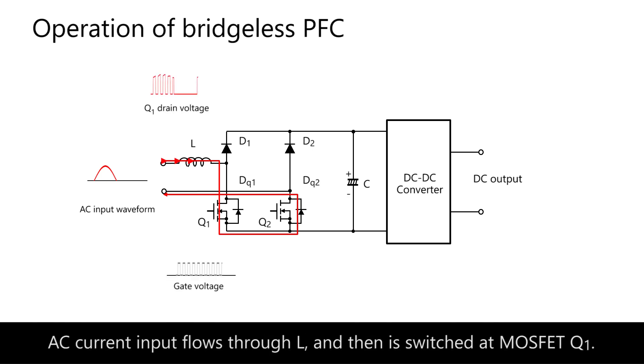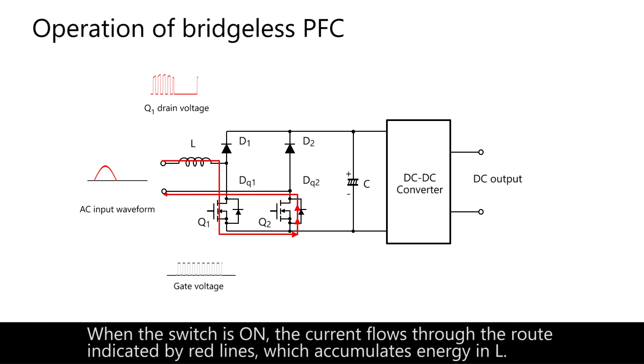AC current input flows through L and then is switched at MOSFET Q1. When the switch is on, the current flows through the route indicated by red lines, which accumulates energy in L.